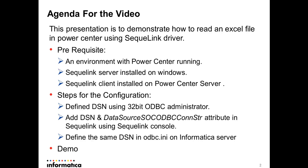Considering that we have the prerequisites ready, let's talk about the essential steps to complete this configuration. There are three steps: number one, define a DSN using 32-bit ODBC Administrator; number two, add that DSN to the data source's ODBC connection string attribute in SQLink using SQLink Console; and number three, add that DSN in the odbc.ini file on the Informatica server. Steps one and two are performed on the machine where SQLink server is running, and step three is for the machine where Informatica server is running.